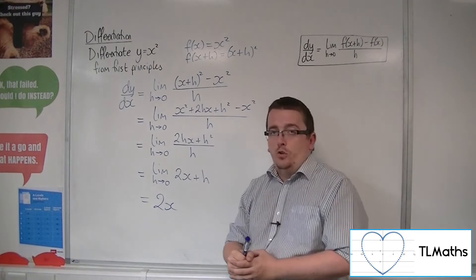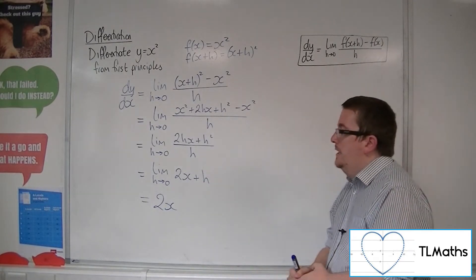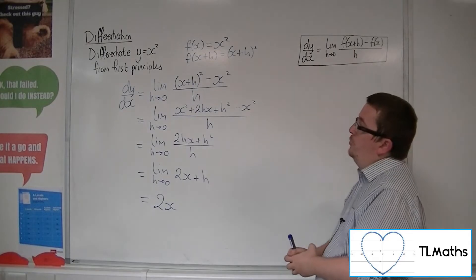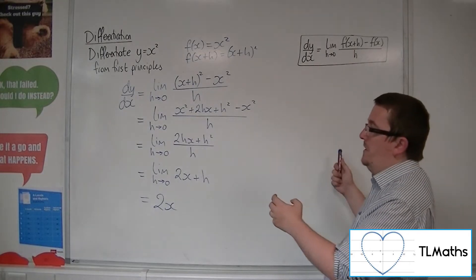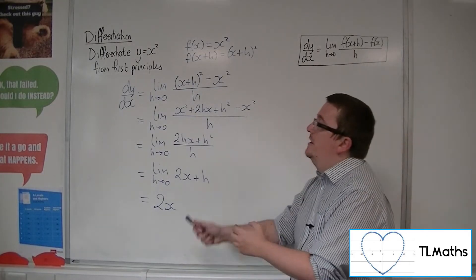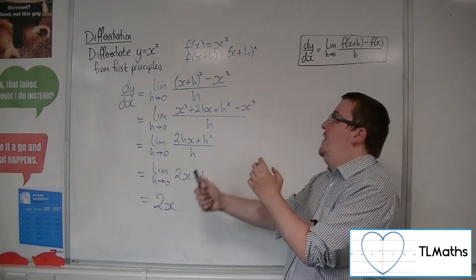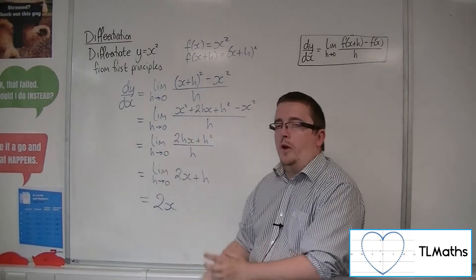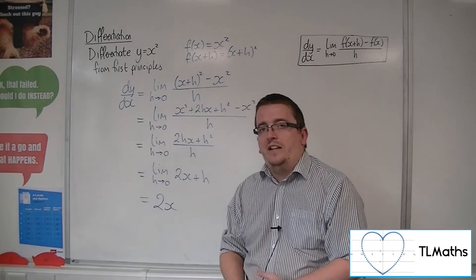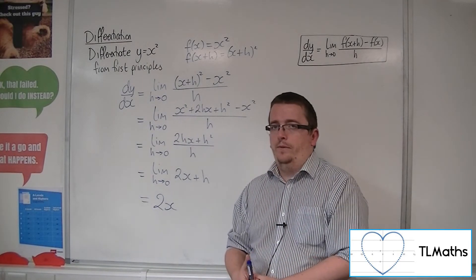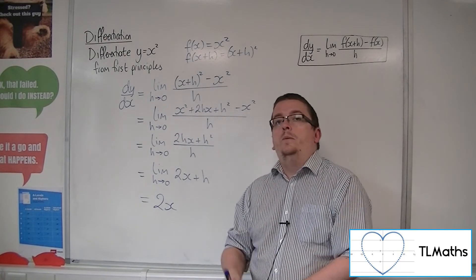And so you'd be left with the 2x. So y equals x squared differentiates to 2x, as we knew. Using our little trick of the 2 coming down to the front and taking 1 off the power, this is what's going on behind the scenes that allows that to happen.